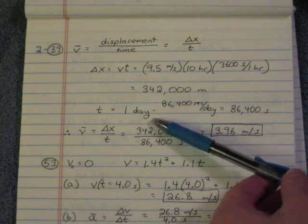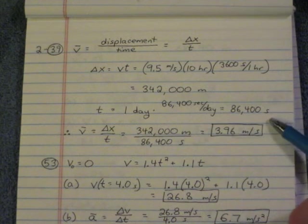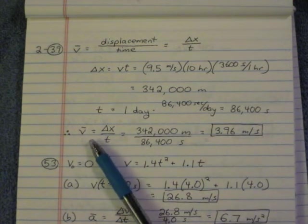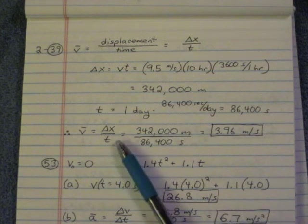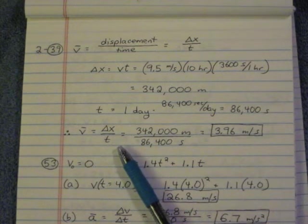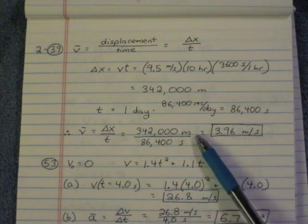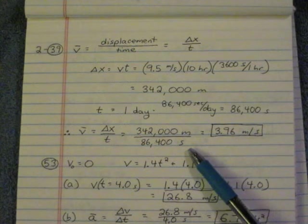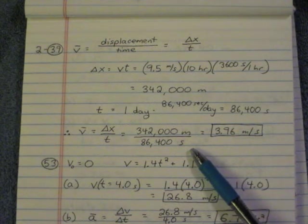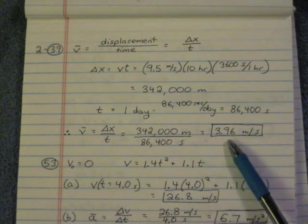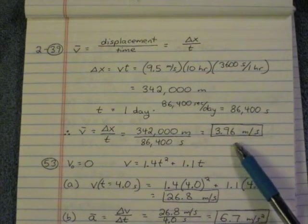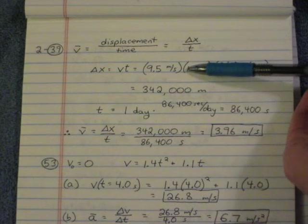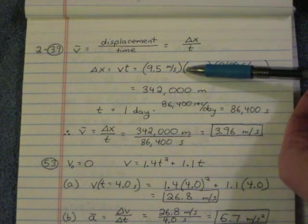Here I do a conversion. Time one day is 86,400 seconds. And so now, when we want to find the average velocity for the entire day, displacement over time. They went 342,000 meters. But we're dividing over the entire day, 86,400 seconds. So for the entire day, their average velocity was 3.96 meters per second. Notice that that's significantly slower than the 9.5 meters per second they were running. But that's because they were resting for most of the day.